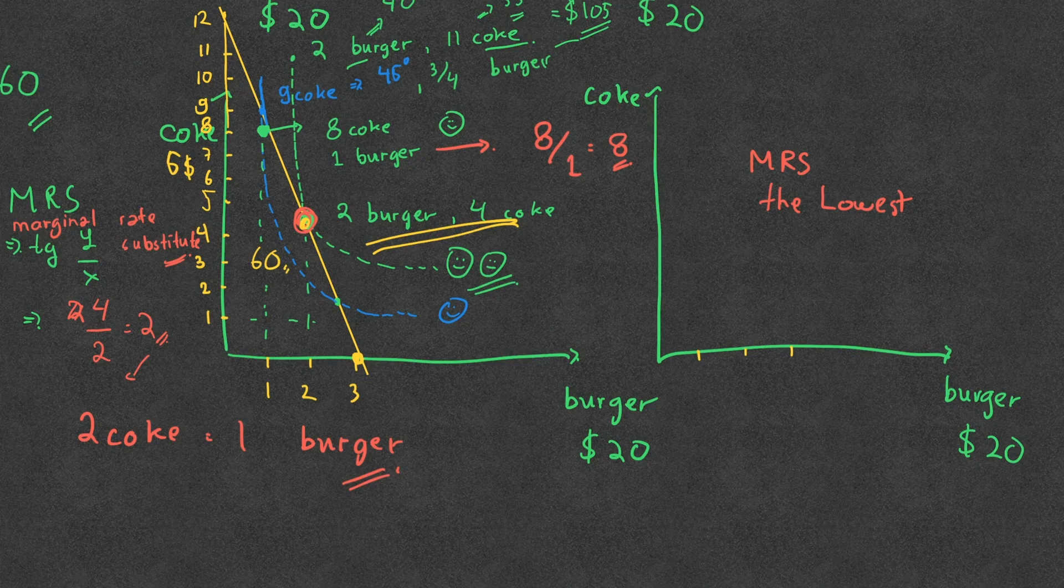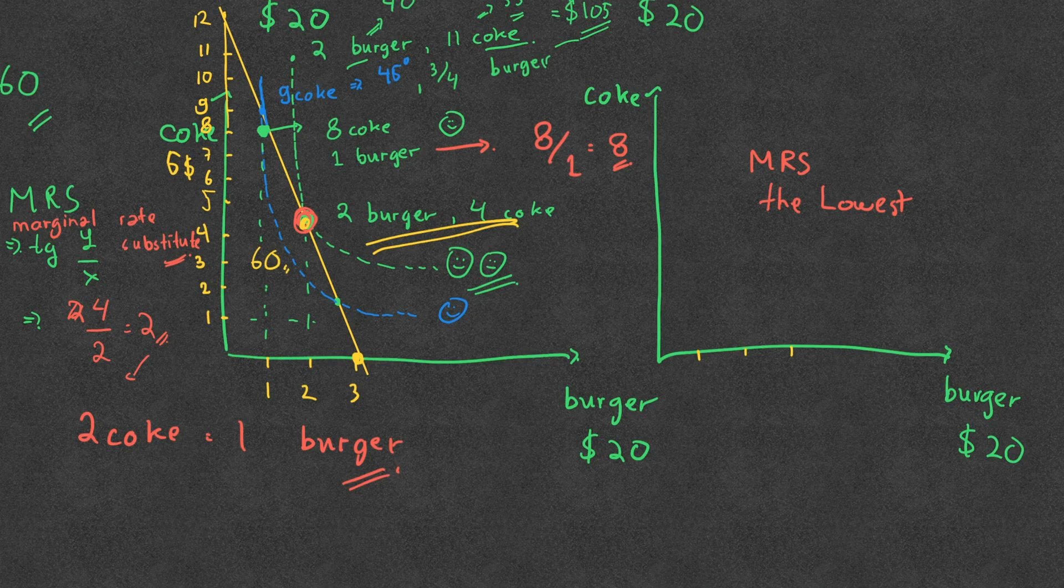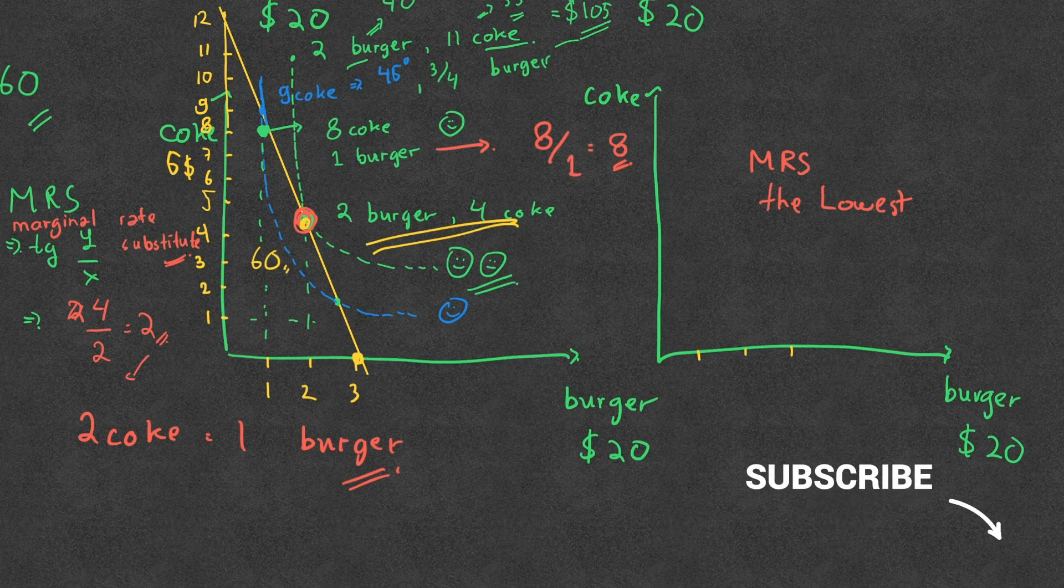That's the concept of indifference curve meeting with the budget constraint. Hope it's explained. Let's see on another course. Don't forget to subscribe, thank you if you see it's helpful.